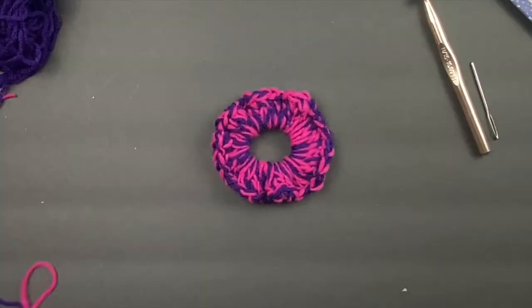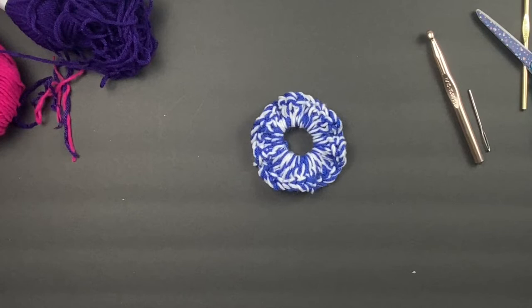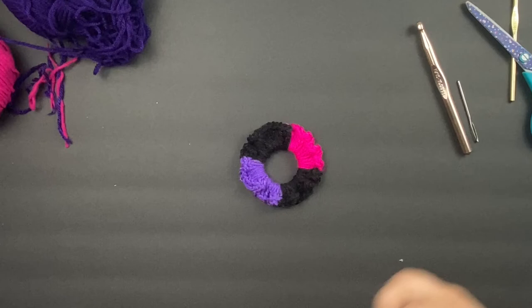Here's another one I made, just to show you different colors. This one is actually only using one strand of the worsted weight yarn, and I used this variegated leftover yarn I had, so this is just how it came out.